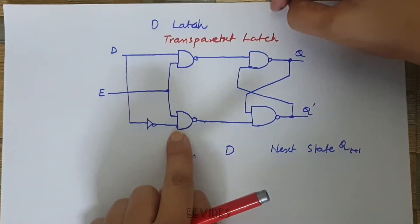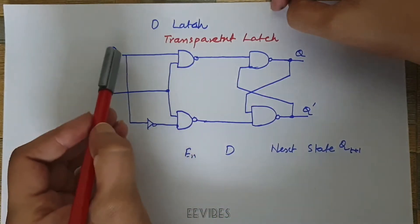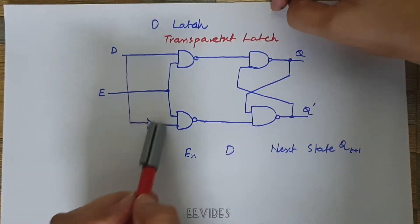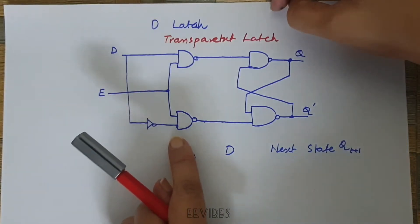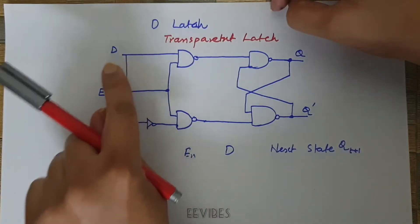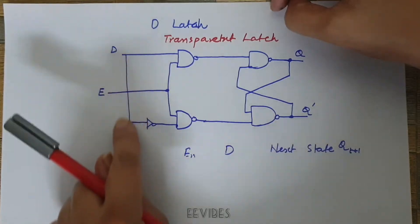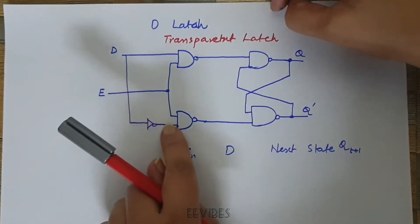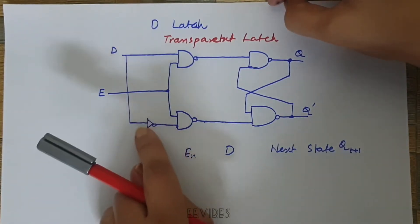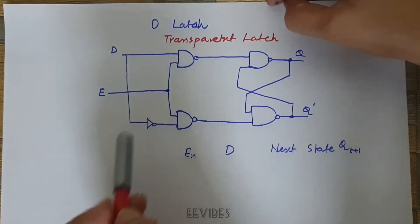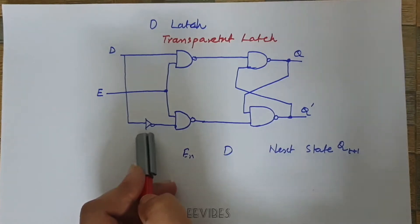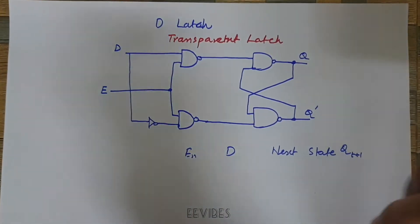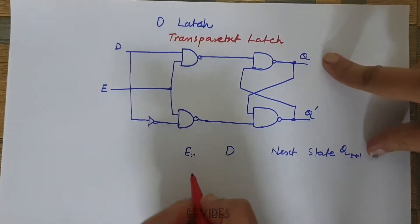With the inverter, the output will always be the complement of the input. This D latch has only two inputs: the D input and the enable input. The input that was R in the SR latch is now inverted, so both inputs are never equal to one at the same time.